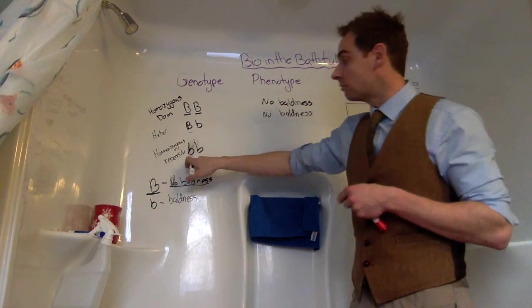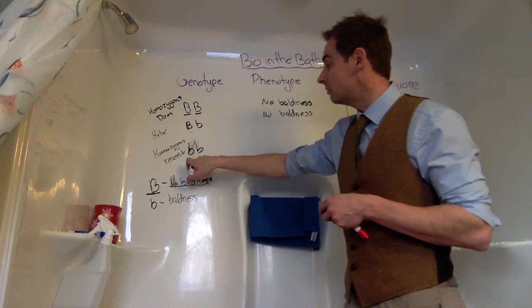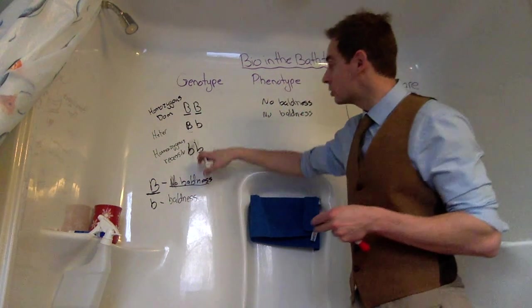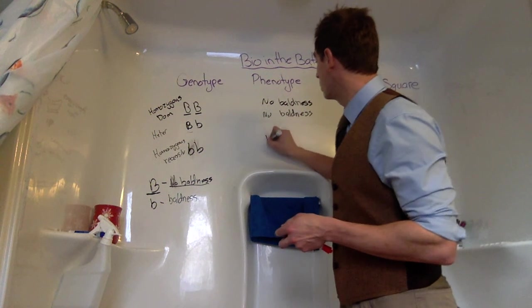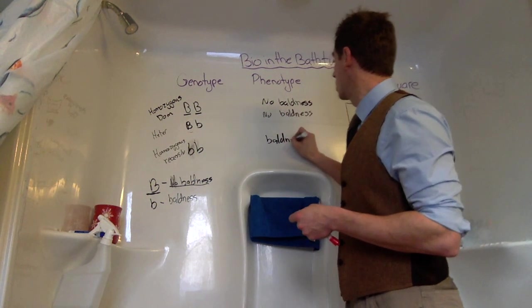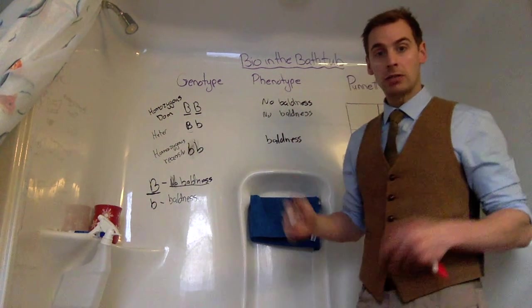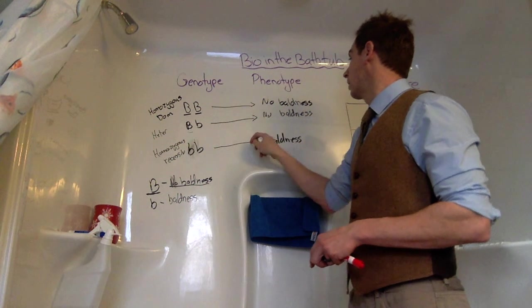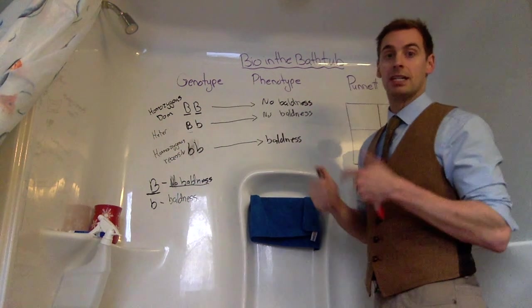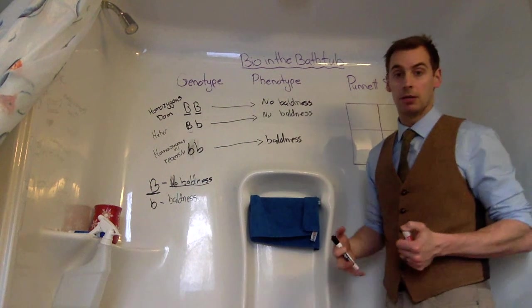But the homozygous recessive, where we have two recessive genes, results in baldness because there is no dominant trait to take over. And here's the very basics of what the difference between a genotype and a phenotype is.